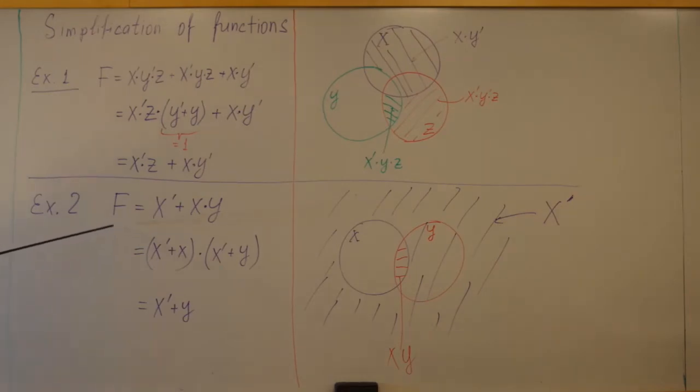Another example: F equals X prime plus X Y. We may use distributive law, which is the one which is counter-intuitive to us, but we have to use it. So X prime plus X Y can be written as X prime plus X times X prime plus Y. And then X prime plus X is one. So we have X prime plus Y. This is the answer.